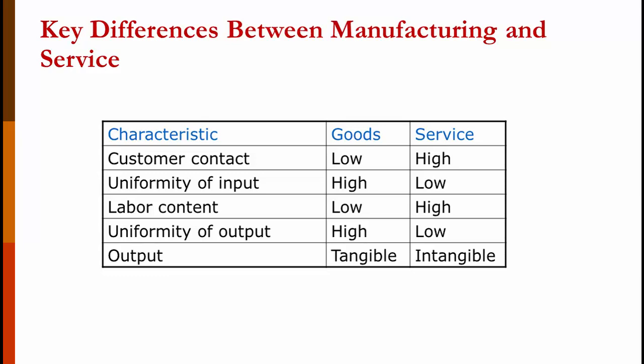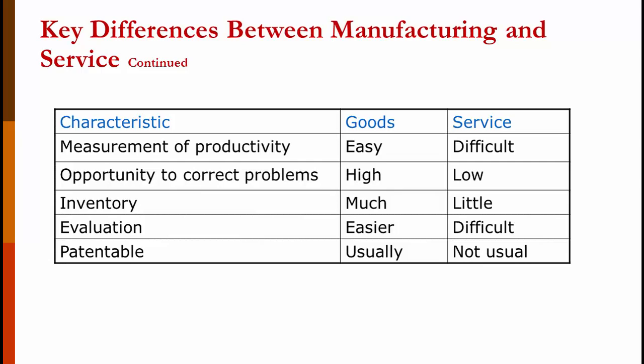Labor content tends to be low in manufacturing and high in services. Uniformity of output tends to be high in manufacturing — every Honda of the same model looks about the same — whereas services have a much lower level of output uniformity. Manufacturing has tangible output you can hold in your hands; services are somewhat to mostly intangible depending on the mix. Measuring productivity is fairly easy in manufacturing — how many cars did you make today? — but more difficult in services. In a doctor's office, for example, seeing simple cases allows high throughput, but difficult cases like heart attacks mean far fewer patients, so just counting patients is a poor productivity measure.